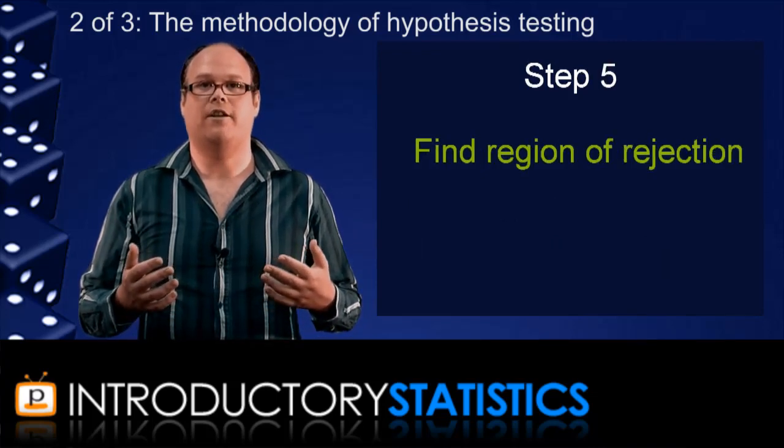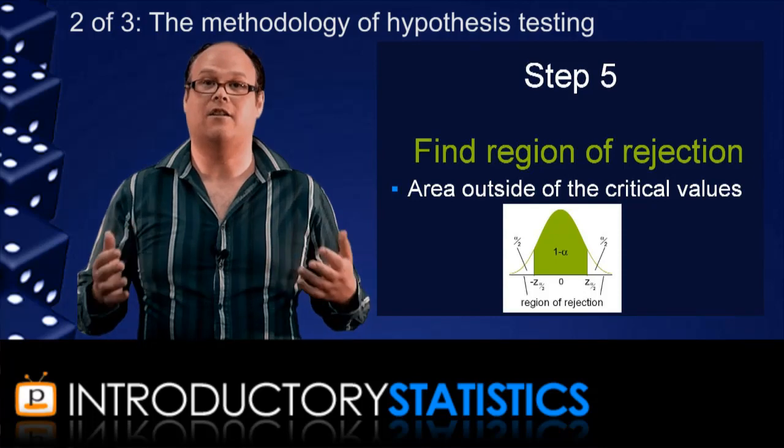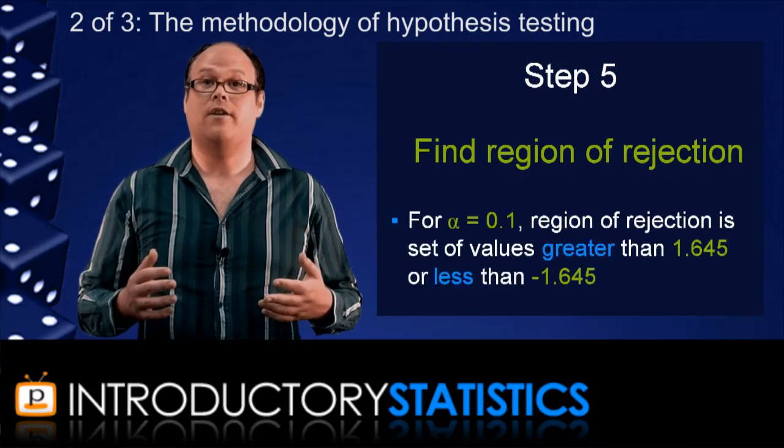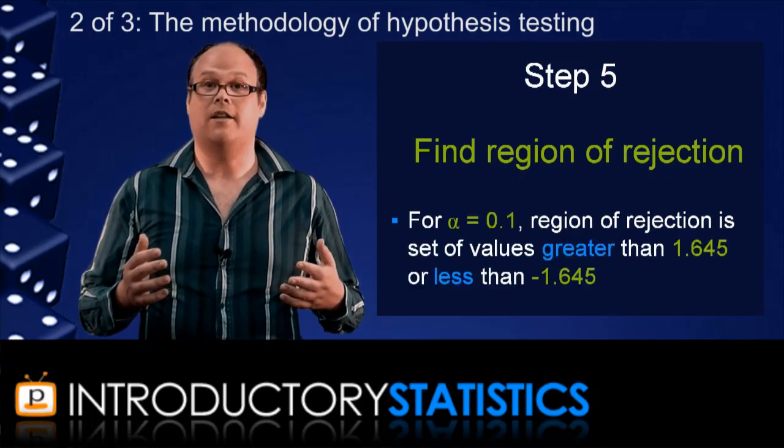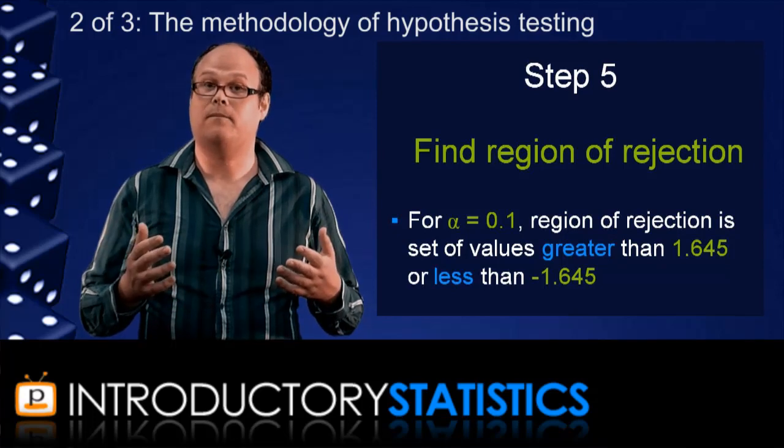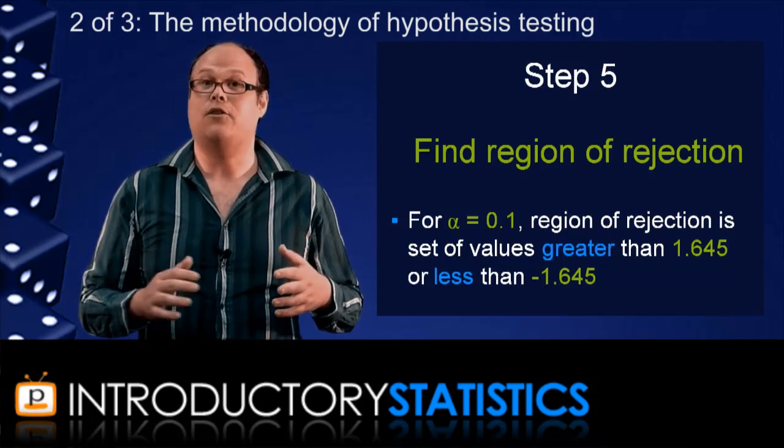Next, we determine the region of rejection. This is the region of z outside the critical values. And this region is very important for how you conclude the test, which we'll explain in just a minute. But first, the next step, you collect a sample. You do this to calculate the sample statistic, which is what gets compared to the null hypothesis.